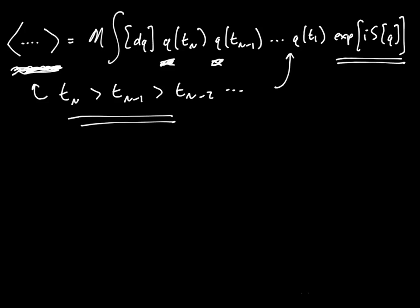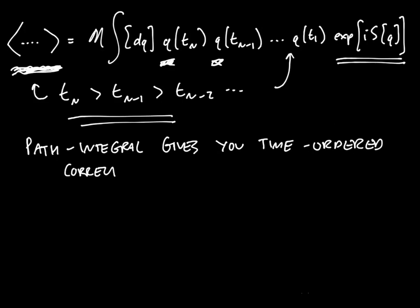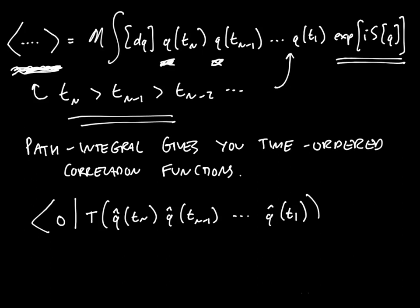In other words what happens is you only get time ordered correlation functions from this approach. The path integral only gives you time ordered correlation functions. In order to emphasize this I will often put a T around the correlation function. So if I'm discussing the time ordered correlation function I'll often write something like this: q hat t n, q hat t n minus one and so on times q hat t one, where this T here indicates that it's a time order correlation function.